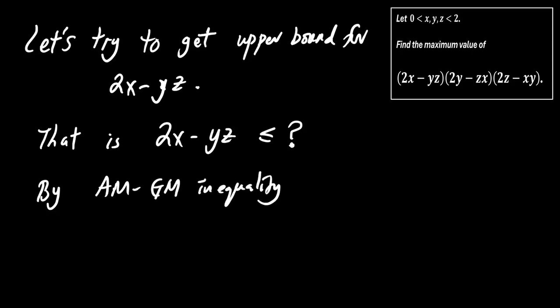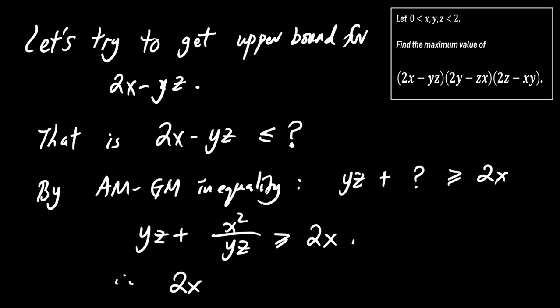By the arithmetic mean, geometric mean inequality, yz plus x squared over yz is greater than or equal to 2x. Rearranging gives 2x minus yz is less than or equal to x squared over yz.